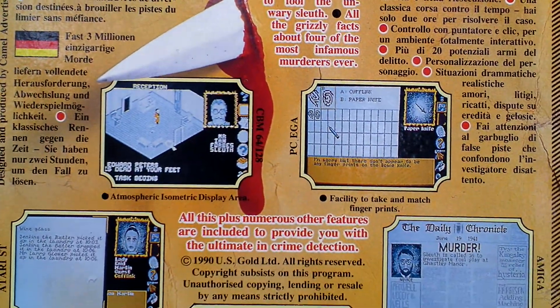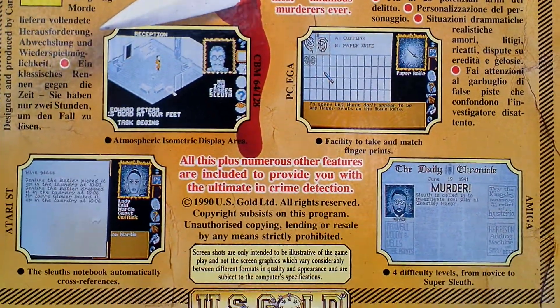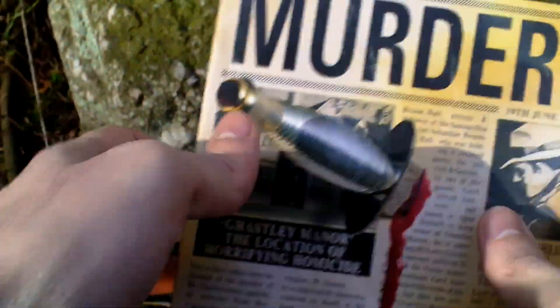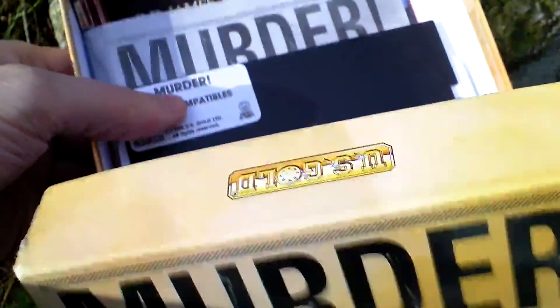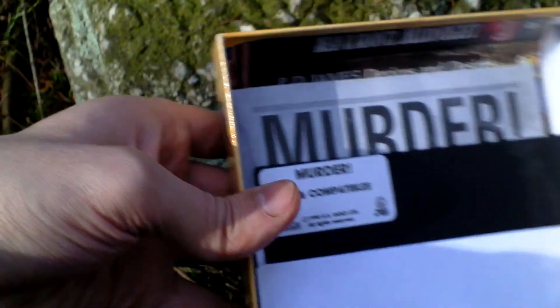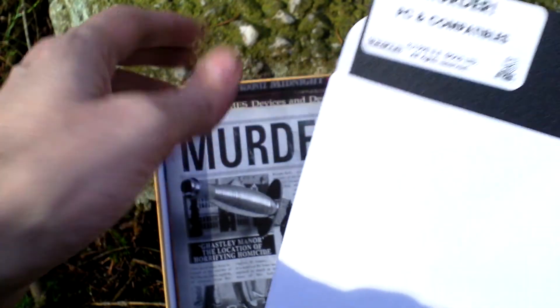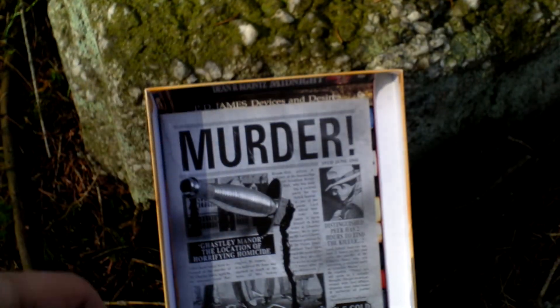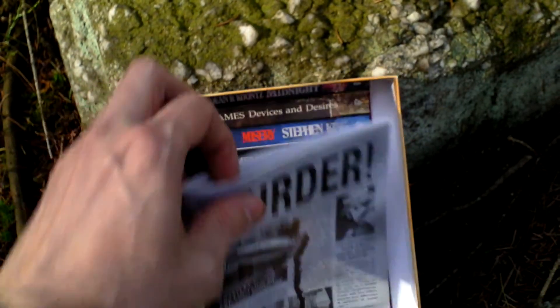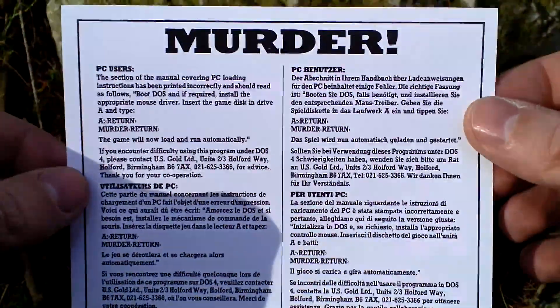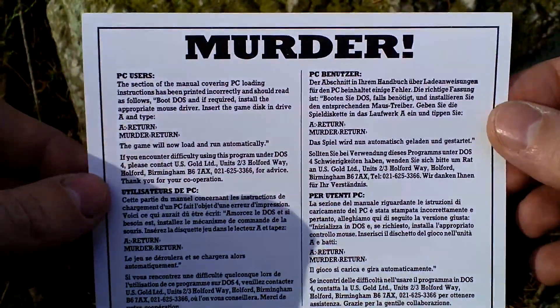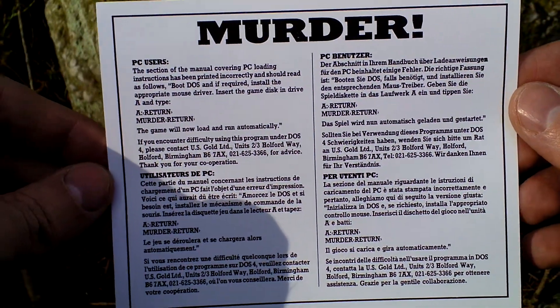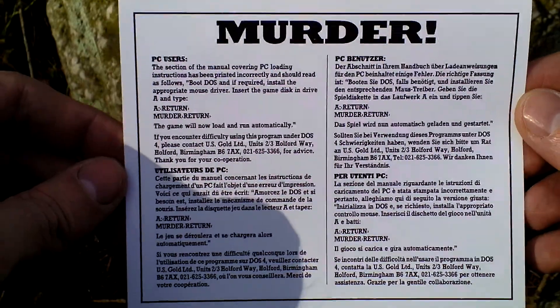This is how the game looks like if I open the box inside. First of all there is the game itself on one five-and-a-quarter-inch disc. Then we have some kind of leaflet — the manual addendum.